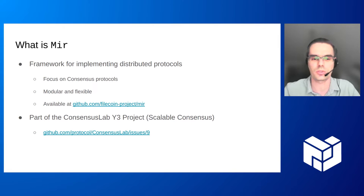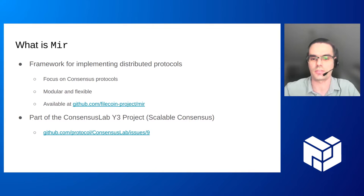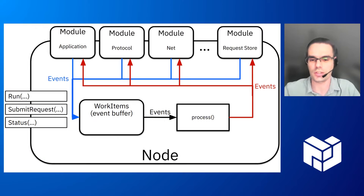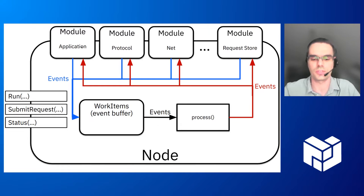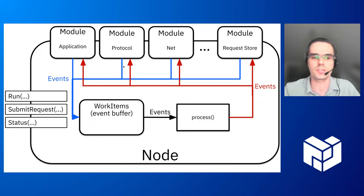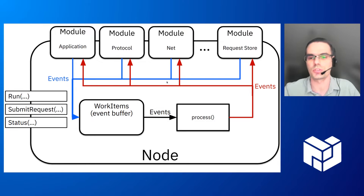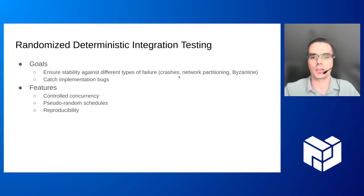It's modular and flexible — you can find it on GitHub. It's part of Consensus Lab's Y3 project, also called Scalable Consensus. The general architecture of MIR is event-centric: there are different modules that can produce and consume events, and the node operates by dispatching events from source to destination modules.